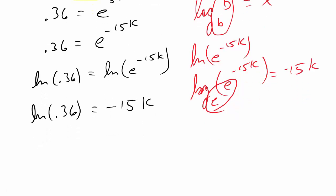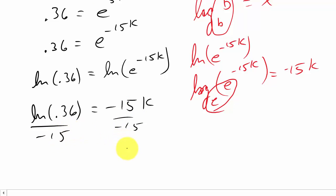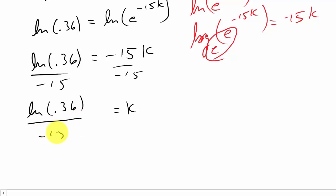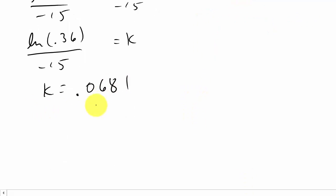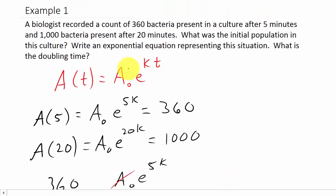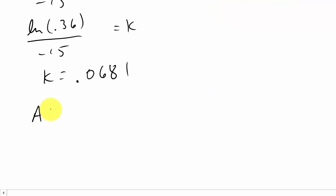So now divide by −15: k = ln(0.36) / (−15). Punching that into the calculator gives a bunch of decimals — I recommend writing all of them out, but for this video I'll round to 4 decimal places. So a(t) = a₀·e^(0.0681t).